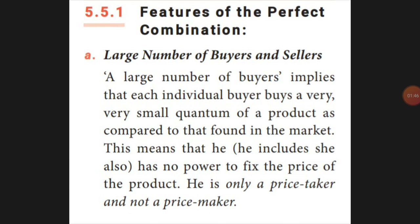So these are the features of perfect competition. The first one is a large number of buyers and sellers. If there is a large number of buyers, each individual buyer will buy a very small quantum. So the buyer is a price taker, not a price maker.